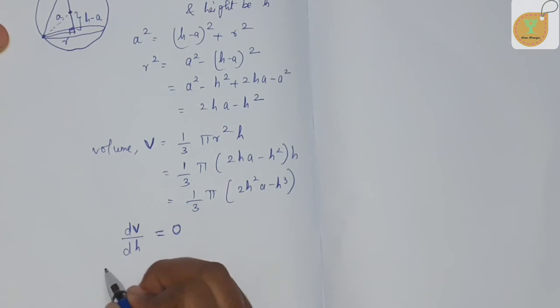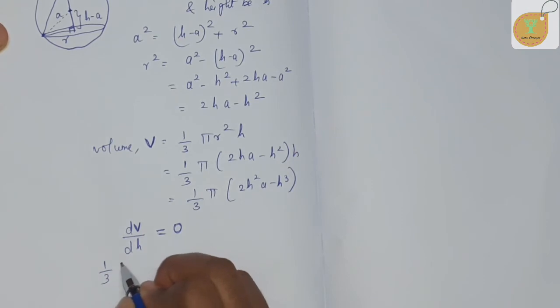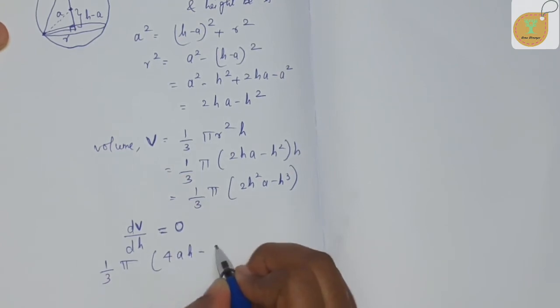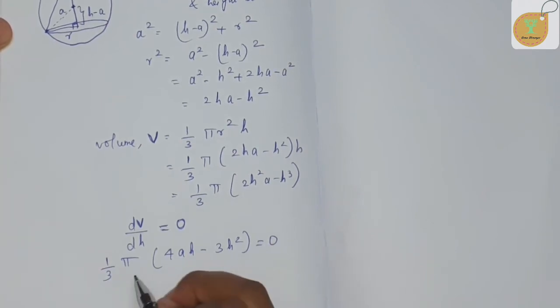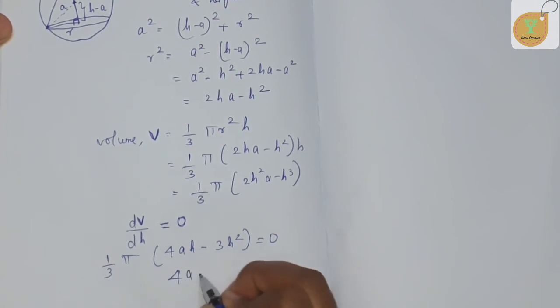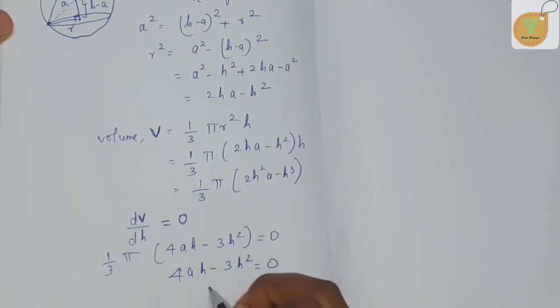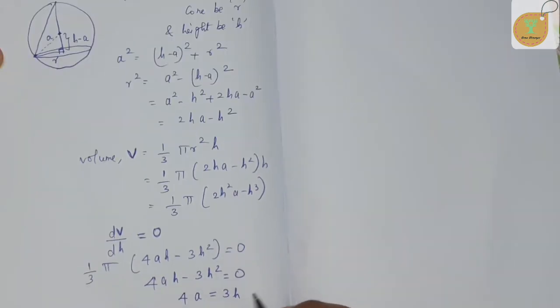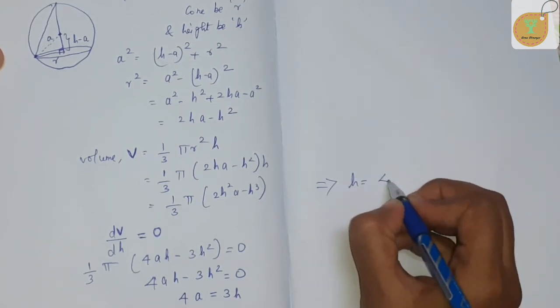On differentiating the function V, we get dV/dH = (π/3)(4aH - 3H²) and equate it to 0. Either π/3 equals 0 or this function equals 0. π/3 cannot be 0, therefore 4aH - 3H² = 0. So 4aH = 3H². This implies H = 4a/3.